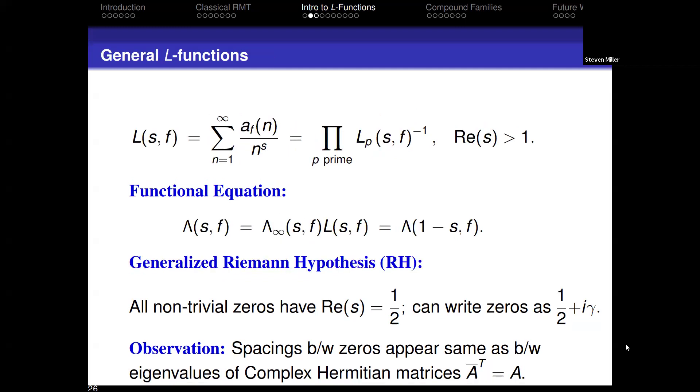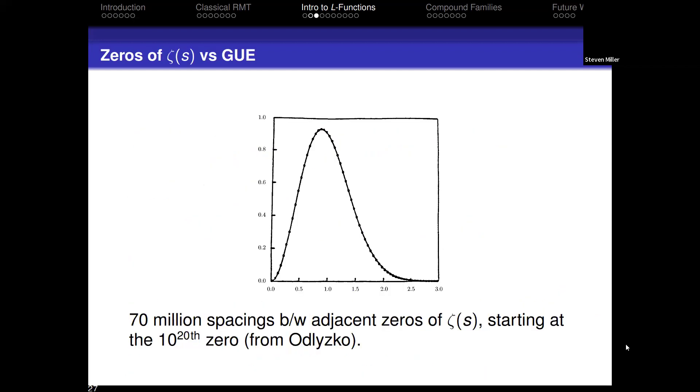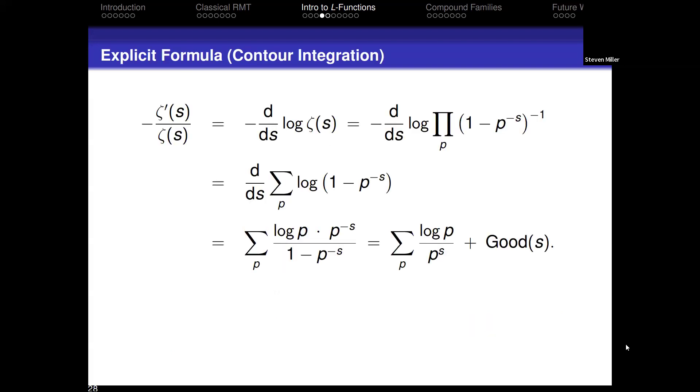The Riemann hypothesis states that all the non-trivial zeros have real part one half. It is true—I get at least one proof a week on this. Instead of looking at the Riemann zeta function, you can look more generally at L-functions, where you replace all the ones over n to the s with some nice functions a_f(n). We will only consider choices where we can write this as a product over primes. We'll see in a moment why it's so important that we can write this as a product over primes. The generalized Riemann hypothesis is that this should also have all of its non-trivial zeros with real part one half. There's lots of statistics you can look at. The first statistic is gaps between adjacent zeros. The solid line is the prediction of what would happen if you look at very large matrices. The dots is what happens when you look at zeros of the Riemann zeta function starting at the 10^20th zero. Phenomenal agreement. It looks like very large matrices describe what's going on with the zeros of the Riemann zeta function. But it turns out that this is not the whole story.